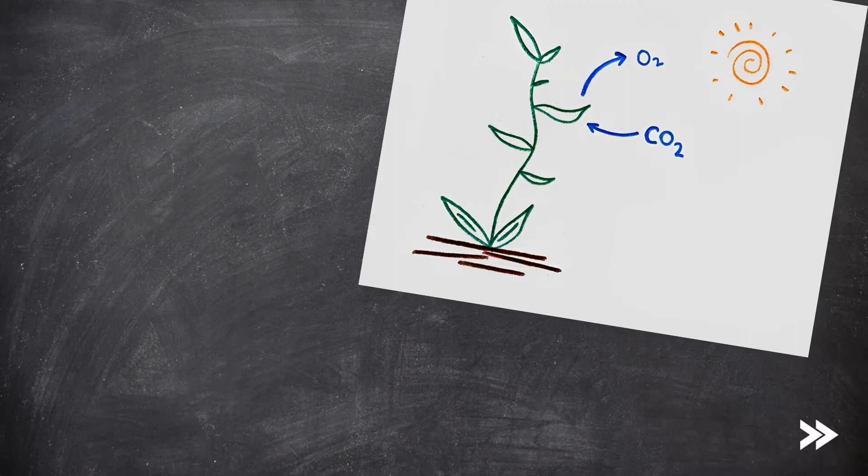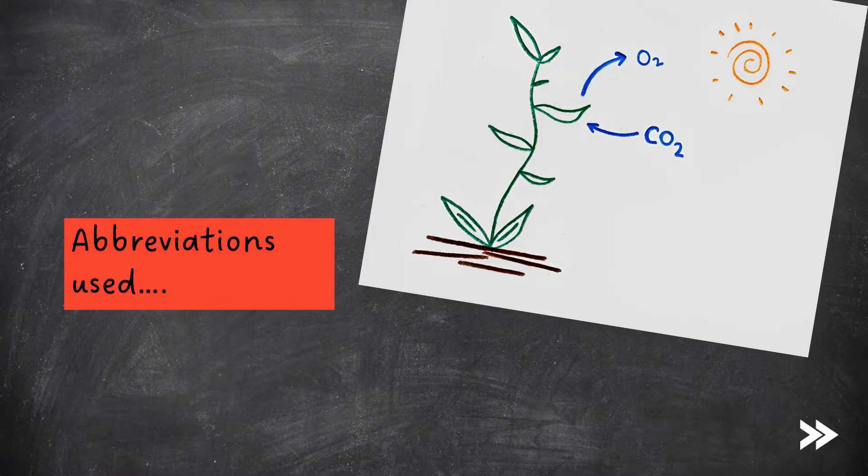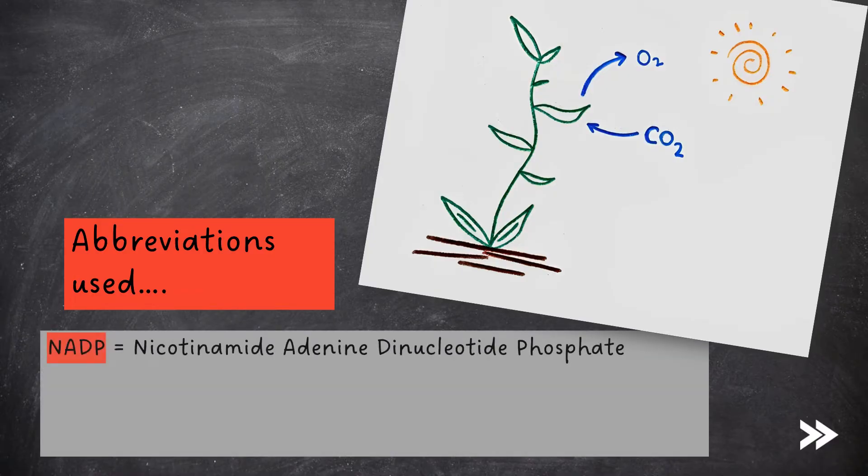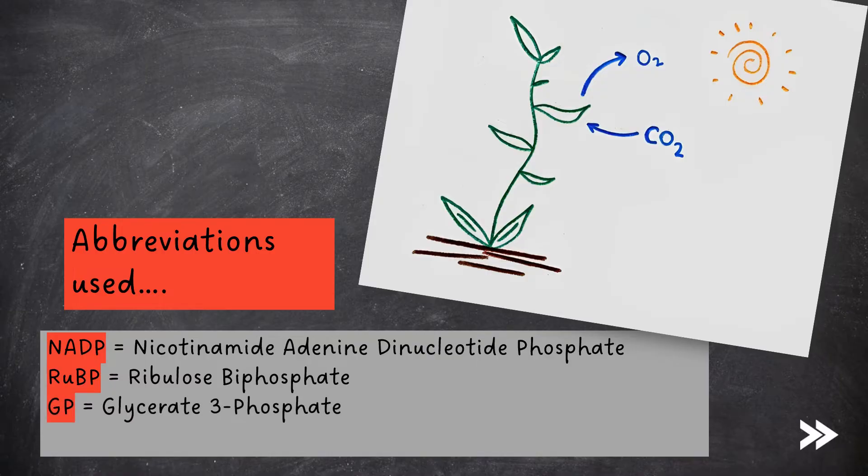Finally there are a number of different chemicals that are mentioned in each stage and it is perfectly accepted in exams to refer to them using their abbreviated versions not their full names. So you can just say NADP instead of nicotinamide adenine dinucleotide phosphate. Ribulose biphosphate can be abbreviated as RUBP but note however that RUBP is written with BP in capitals. Glycerate 3-phosphate can be written as GP and triose phosphate can be written as TP.